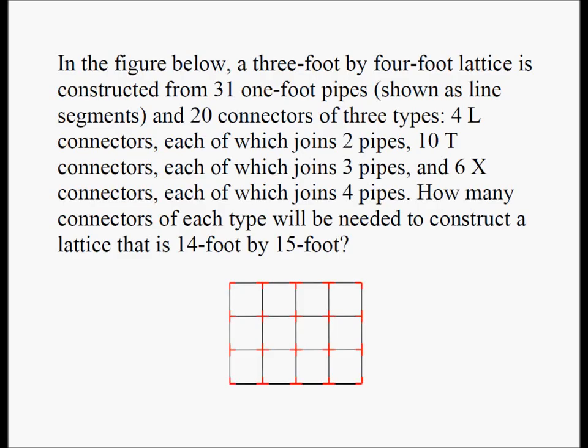In the figure below, a 3 foot by 4 foot lattice is constructed from 31 one-foot pipes, shown as line segments, and 20 connectors of three types: 4 L connectors, each of which joins two pipes; 10 T connectors, each of which joins three pipes; and 6 X connectors, each of which joins four pipes. How many connectors of each type will be needed to construct a lattice that is 14 foot by 15 foot?